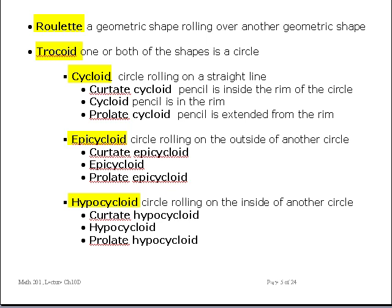To trace out these curves, there has to be a pencil. The location of the pencil gives you another subset of these curves. If you have the pencil located right in the rim of the moving circle, then the curve is called the cycloid, the epicycloid, or the hypocycloid.